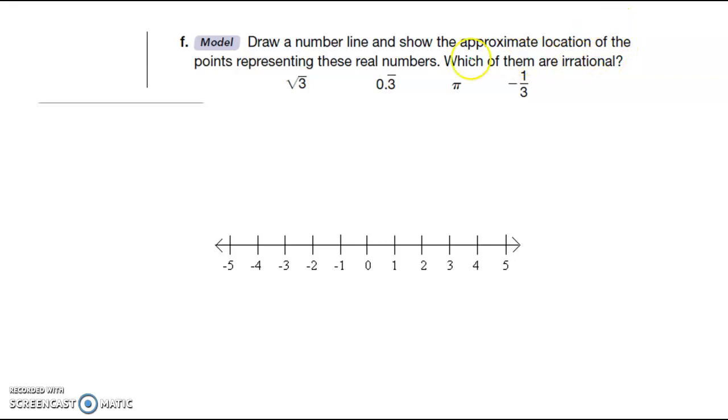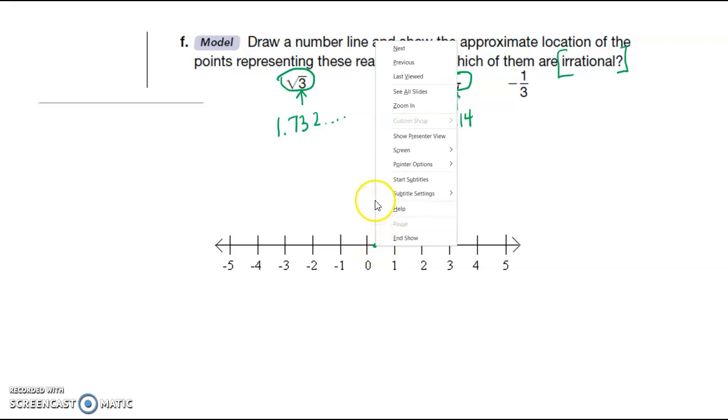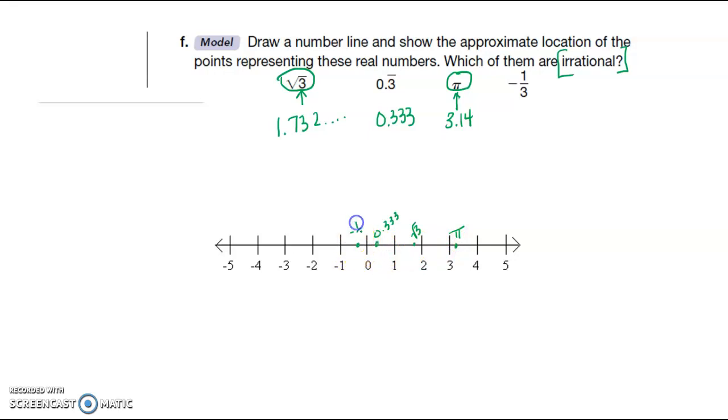Draw a number line and show the approximate location of the points representing these real numbers. Are any of them irrational? So pi is irrational, this one is not irrational, square root of 3 is going to be irrational as well, that's 1.732 and it goes on forever, and then negative 1 third, which is not irrational. So the irrational ones I'm going to circle, and then I'm going to put them on the number line here. 0.333, and then 1.72, so my square root of 3 goes there, pi is going to go right there, and negative 1 third is going to go there.